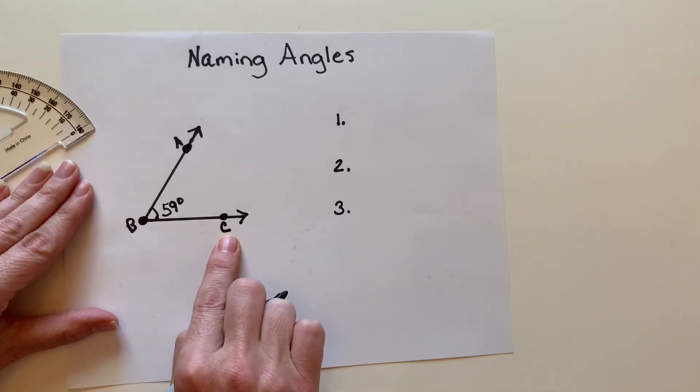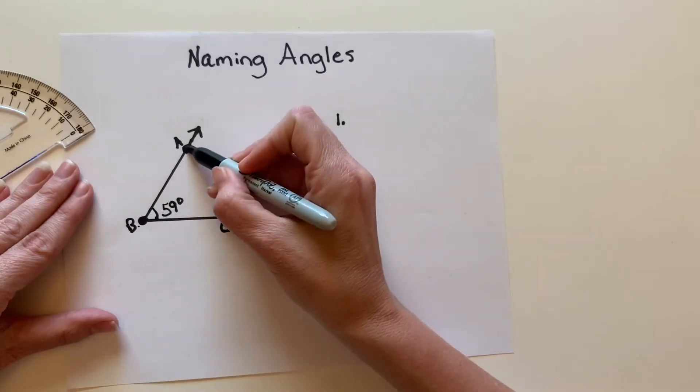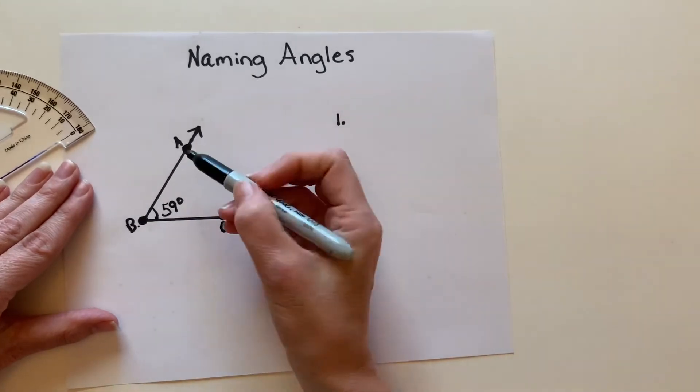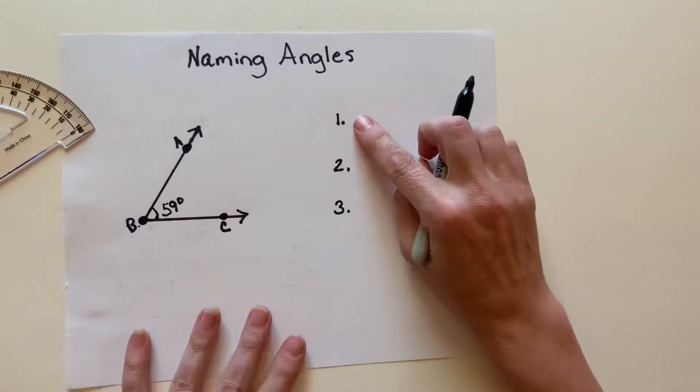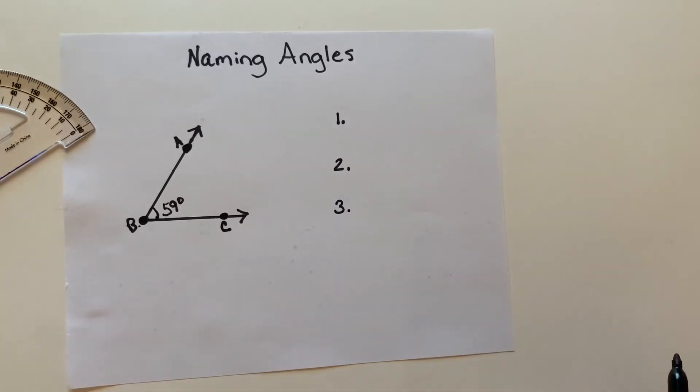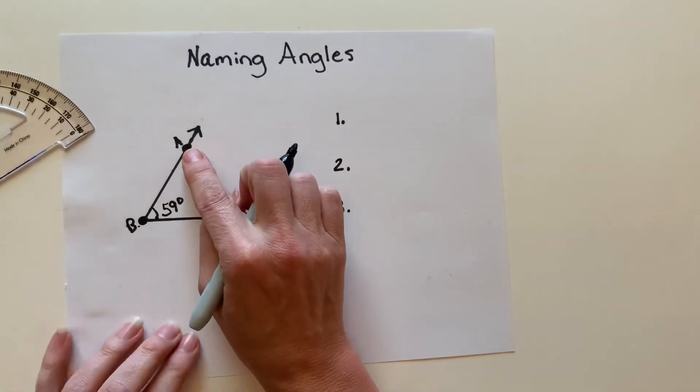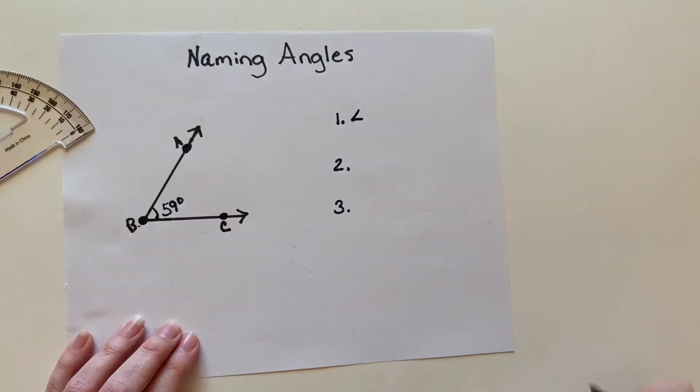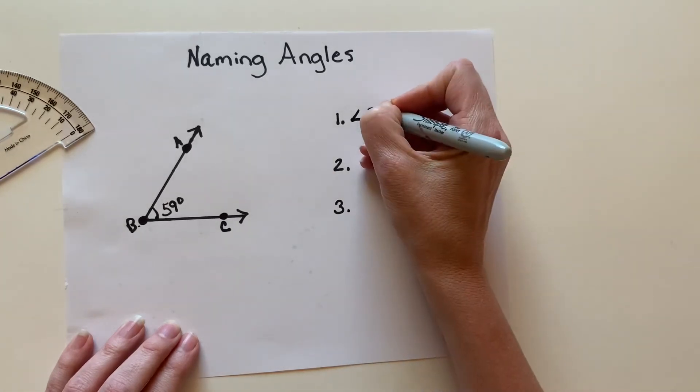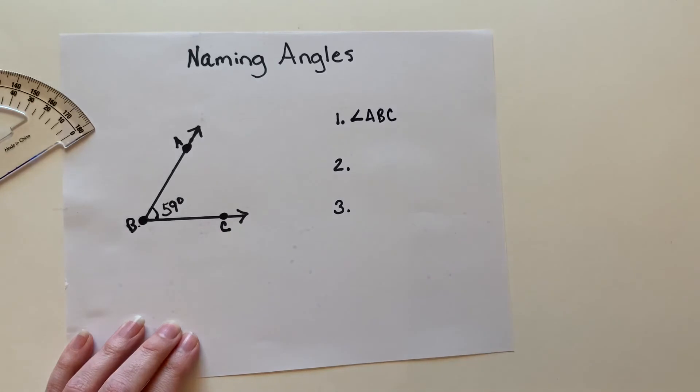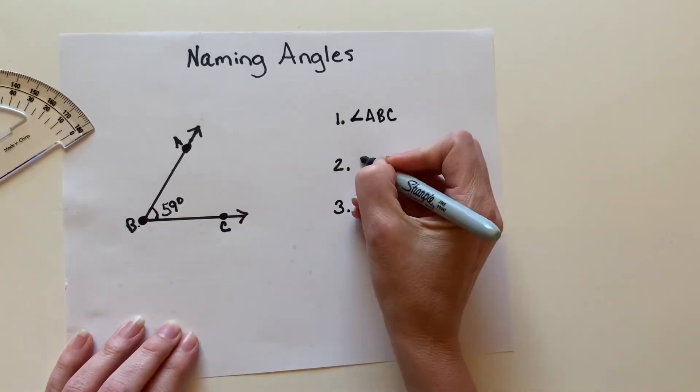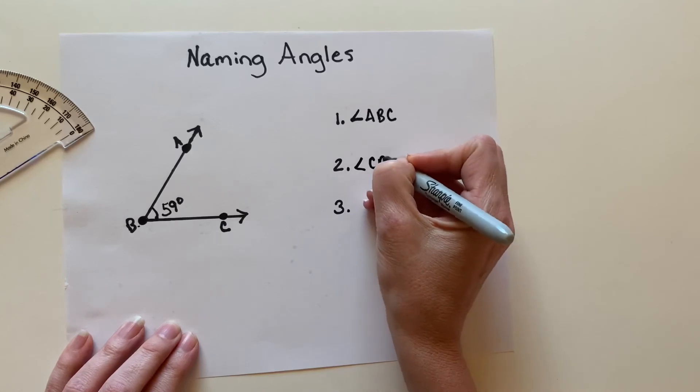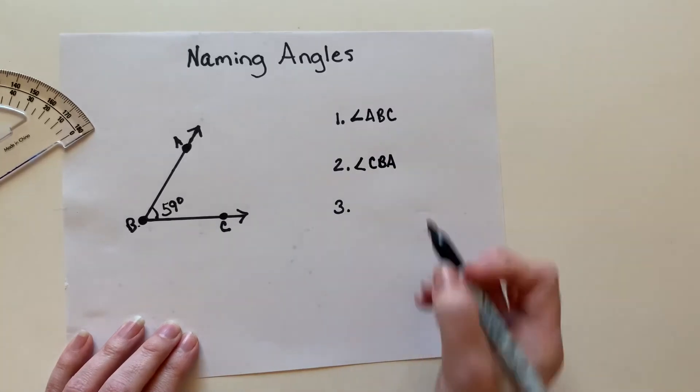I have three different ways that I can name this angle. I can read it alphabetically, so I can call it angle, and we have this little symbol like this that we say angle in front of when we're reading. We can call it angle ABC, or I can read it backwards. I can call it angle CBA.